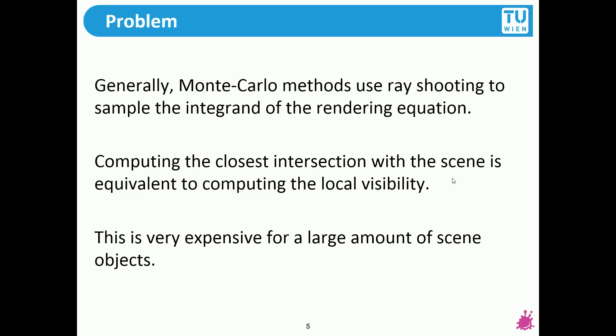This is usually very expensive for a large amount of scene objects. If you start with one ray and you want to check does it intersect any of my scene's triangles, then if you have millions of triangles then each ray has to check all the millions of triangles which one is the first that they intersect. If you have millions of rays you see that this is a quadratic explosion and you will not converge in any reasonable time to a high quality image.